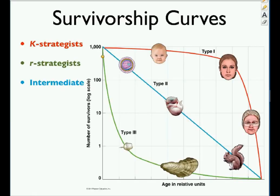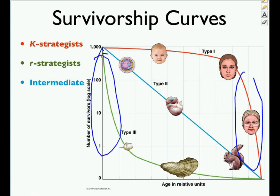Survivorship curves show how many individuals survive at each life stage. R-strategists start with huge numbers of babies but experience massive die-off early on, so few reach adulthood. K-strategists have less early die-off but more mortality in old age. Intermediate species follow a steady pattern, dying at roughly similar rates throughout their lifespan.